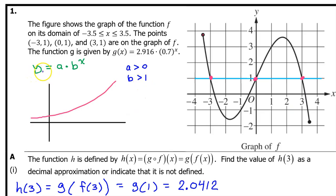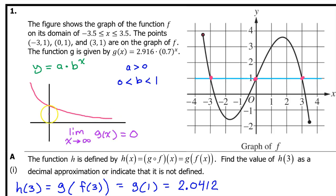We know that the model a times b to the x is an exponential function, which looks like this if a is positive and the b value is greater than 1. A is positive in the case of g of x, however, b is between 0 and 1, not greater than 1. When the b value is between 0 and 1, we get a decreasing exponential function, sometimes referred to as exponential decay. As x increases without bound, g of x approaches 0. It approaches the x-axis. In other words, the limit as x approaches infinity of g of x is 0.